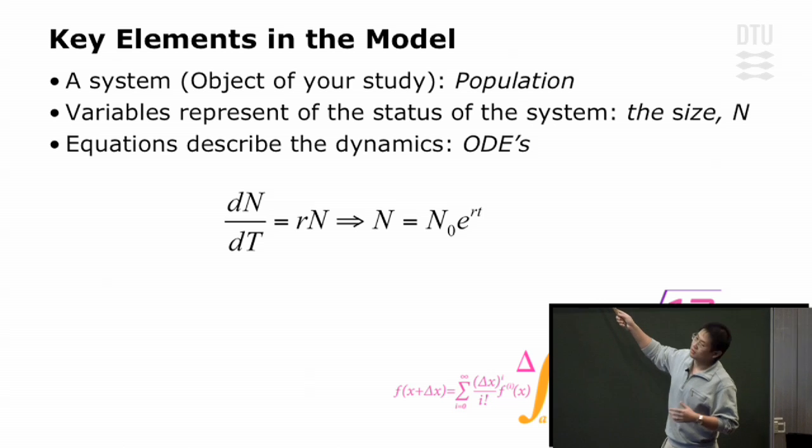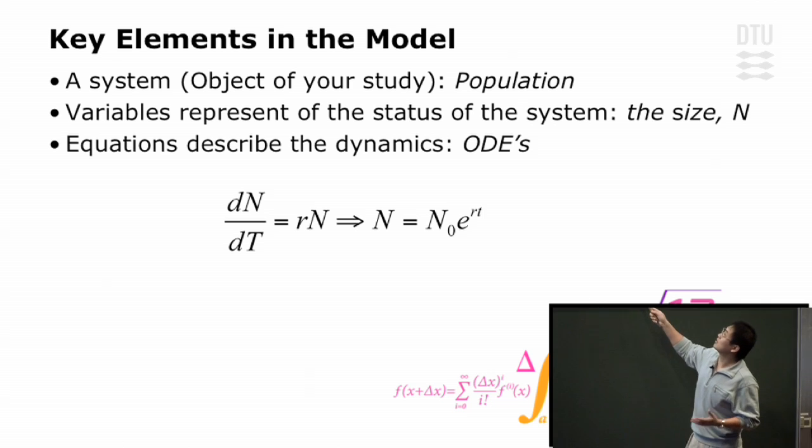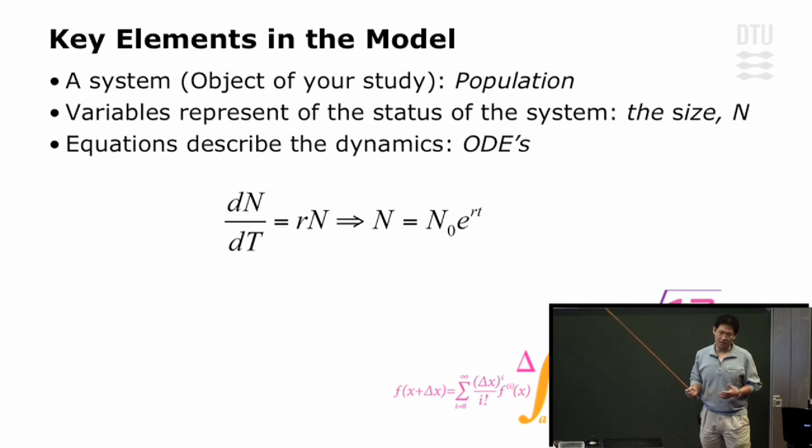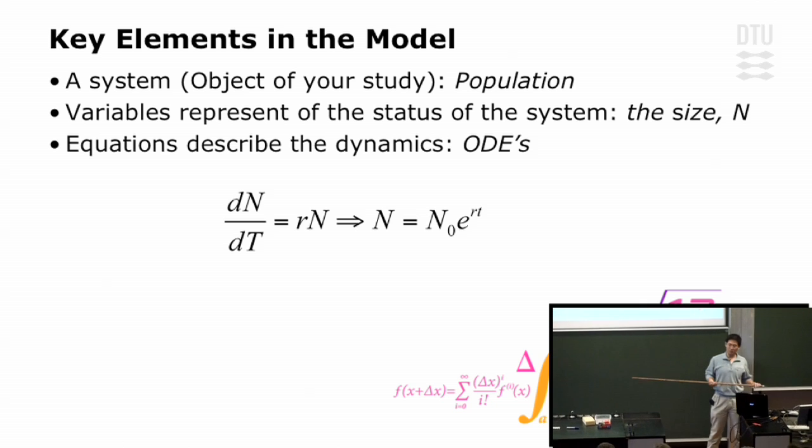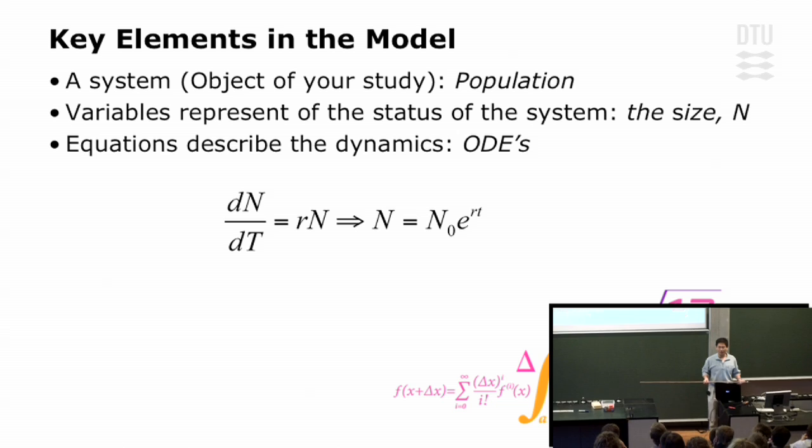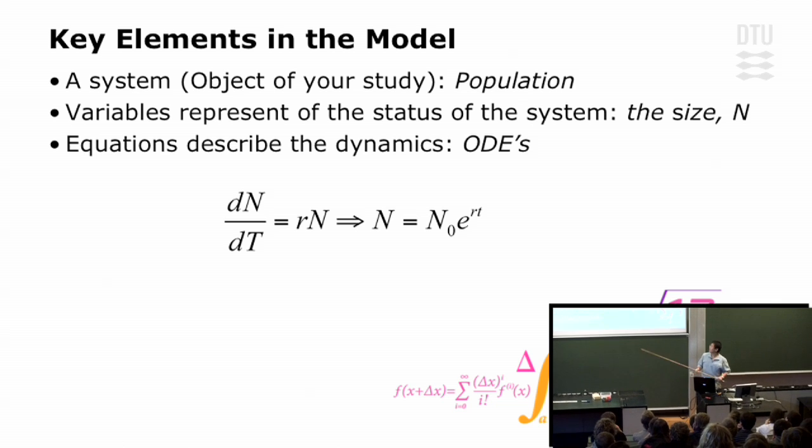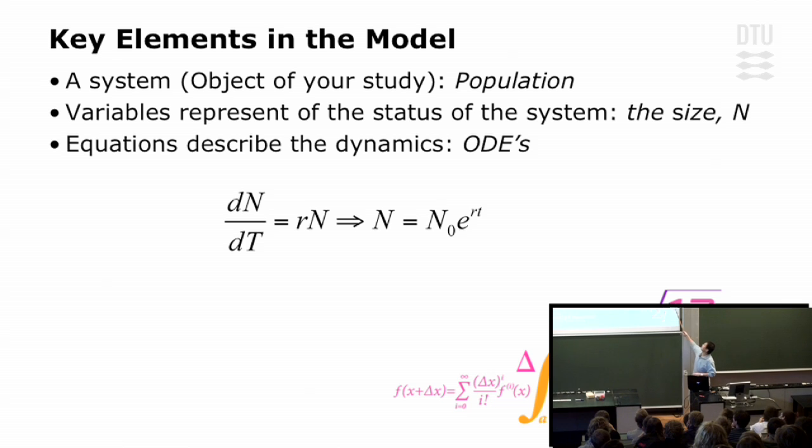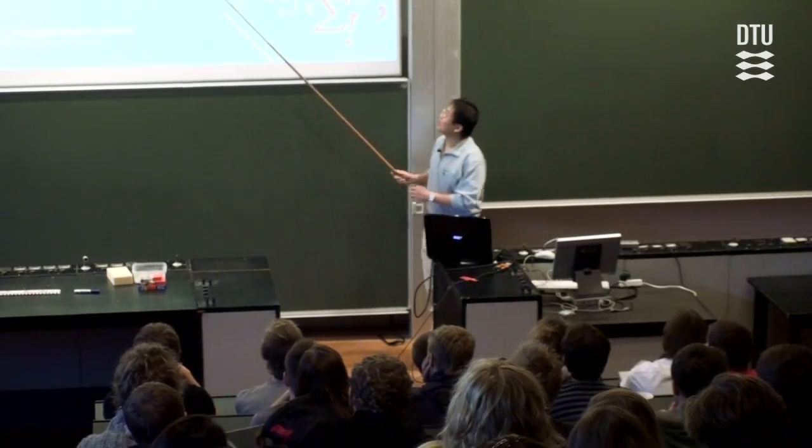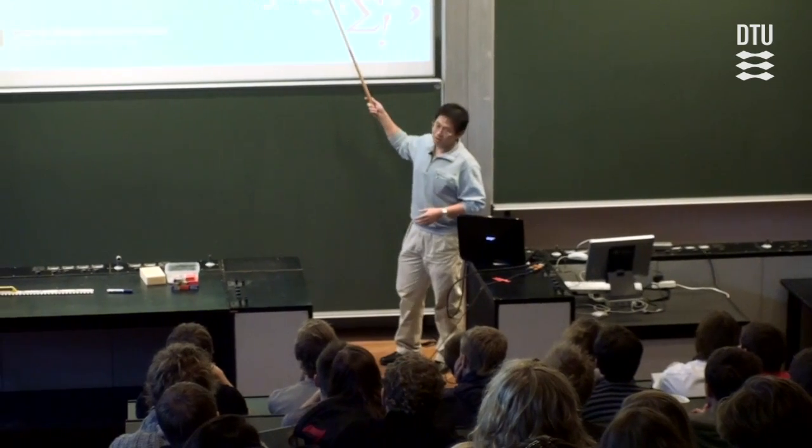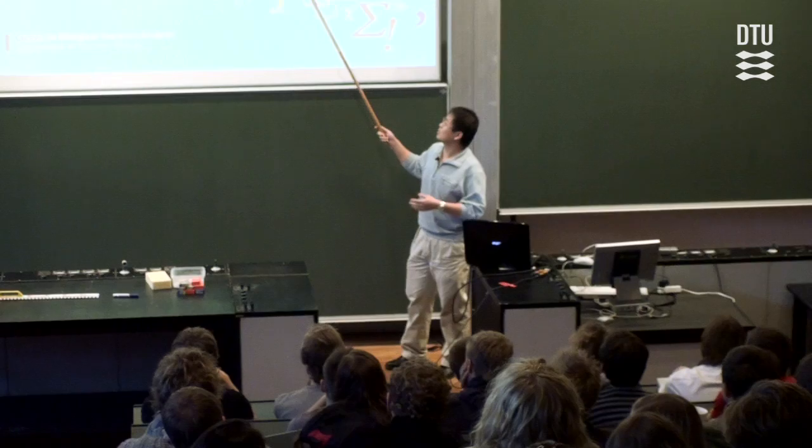And then you need a variable, one variable or a set of variables that represent the status of the system. When we're talking about population, what we're interested in is how many people are there for a given time point. That's why we use the size, the N, as the status variable. Finally, the most important step is to find an equation that describes the dynamics. That's where the ODEs came into play.